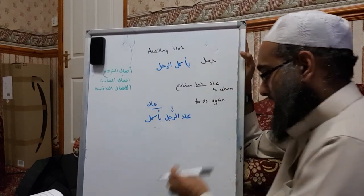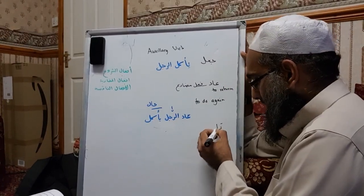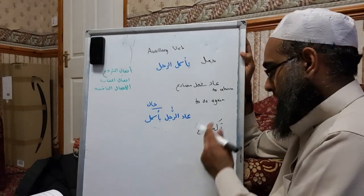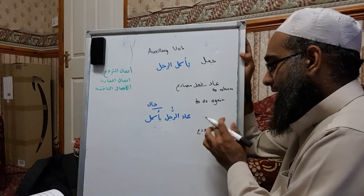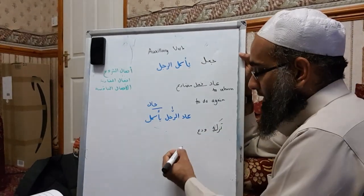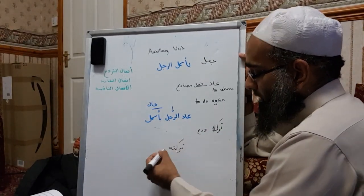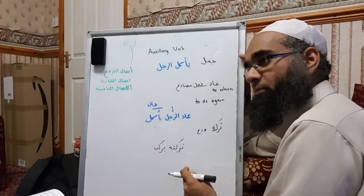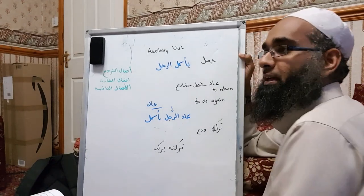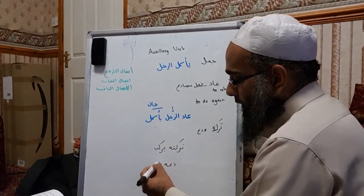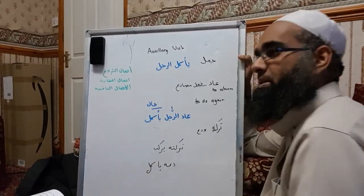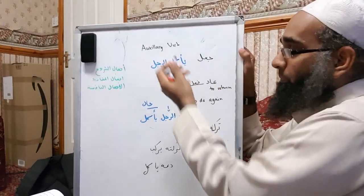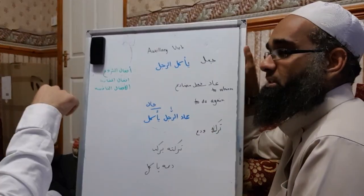Similarly, you can have another verb: 'taraka' or 'wada'a,' meaning to leave. For example, 'taraktuhu yarkab' means I left him riding — basically I let him ride. Or 'da'hu ya'kulu' means leave him eating, i.e., let him eat. These are common verbs that don't get classified as auxiliary verbs, but they behave similarly — they give dimension as opposed to expressing a primary meaning.